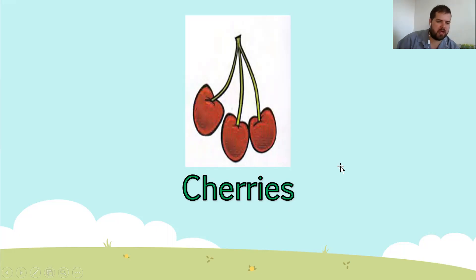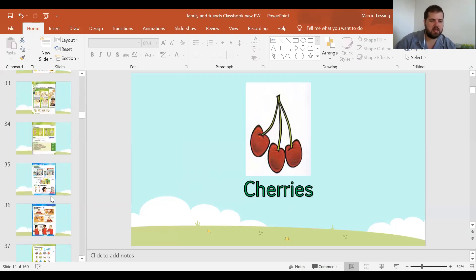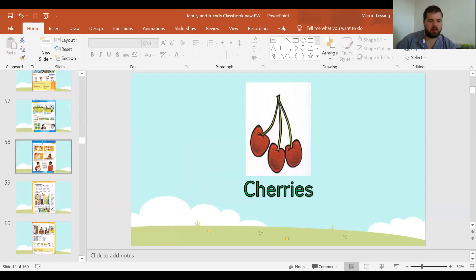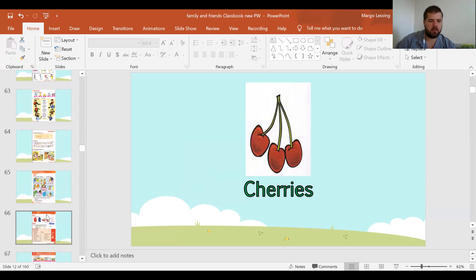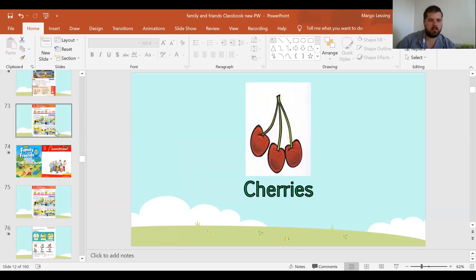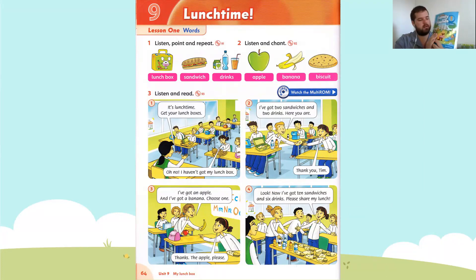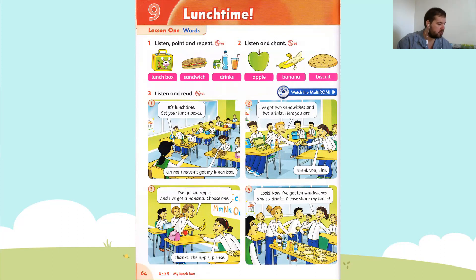Now let's get to our page number. I believe we're on page 64. We all need to go to page 64 in our Family and Friends classbook. We are on Unit 9, and we are doing Lunchtime — I know that's everyone's favorite time.